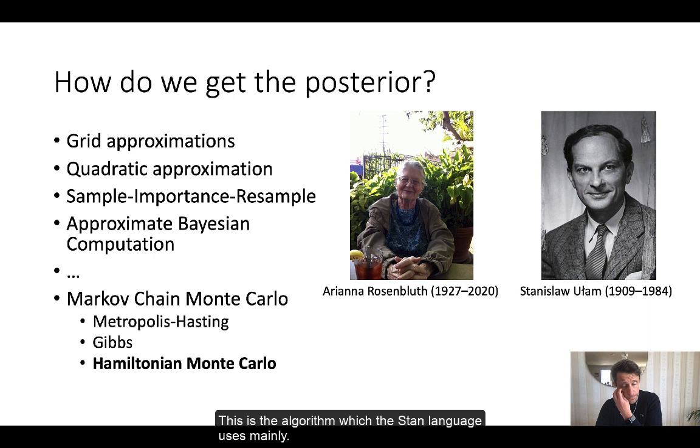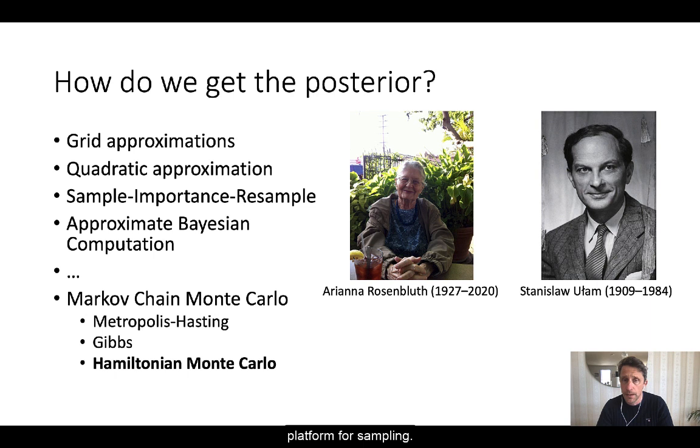In our example later, we will use Hamiltonian Monte Carlo. This is the algorithm which the Stan language uses mainly. Stan is one of the most popular specification languages, I would say, when you're working with Bayesian models. Very many software packages use Stan as the underlying platform for sampling.